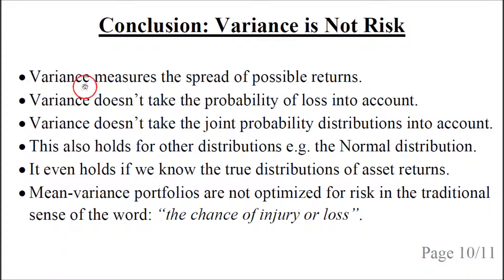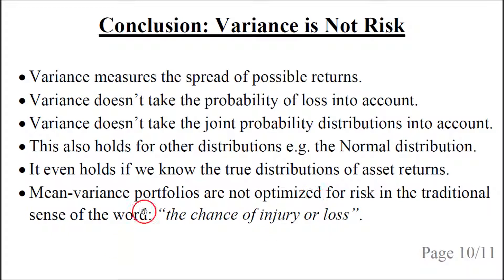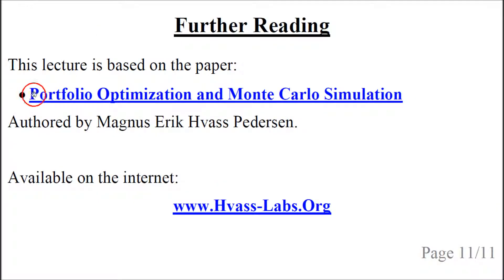The variance measures the spread of possible returns. It doesn't take the probability of loss into account, and it doesn't take the joint probability of different asset returns into account. This criticism also holds for other distributions, for example the normal distribution, which you can check out for yourself, and it even holds if we know the true distribution of asset returns. So mean variance portfolios are not optimized for risk in the traditional sense of the word, which means the chance of injury or loss. These short examples were taken from a paper, which you can find at the internet website linked below the video.